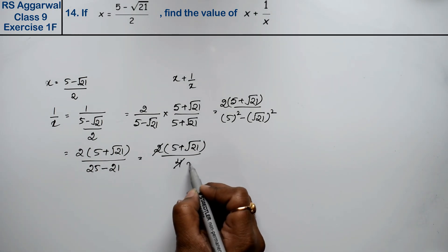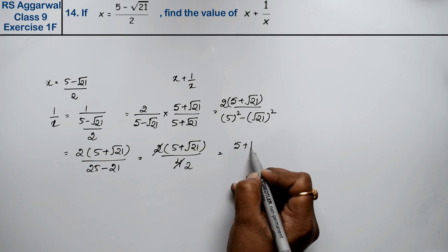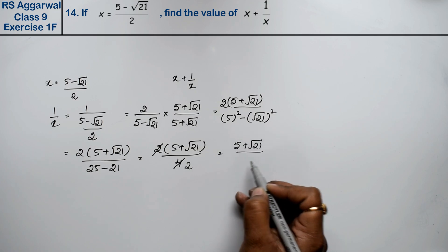Simplifying 2(5 + √21)/4, the 2 cancels to give us (5 + √21)/2. So 1/x = (5 + √21)/2.